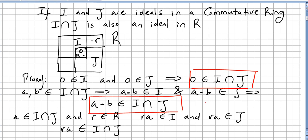So picking these three facts: that zero is in intersection, A minus B is in intersection of ideals, and that the intersection absorbs all the products, we can say that I intersection J is an ideal.